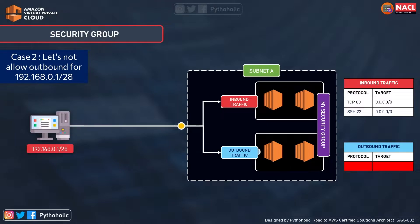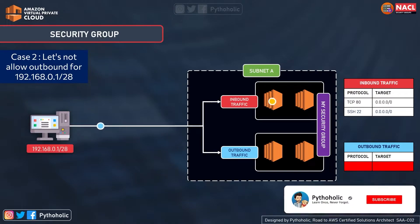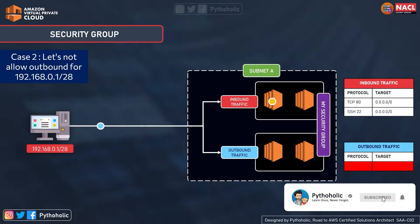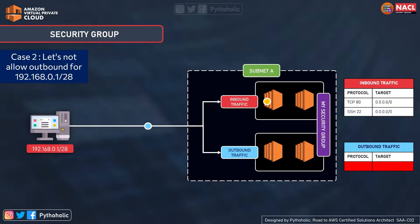Now let's take case 2 for security groups and remove access for all IPs from the outbound rules. The general logic dictates that it should prevent connectivity, but that's not the case. Because security groups are stateful, and because of connection tracking, if the inbound rule allows all traffic, by default the outbound rule holds no value. That's why if we block the outbound rules, it still works.